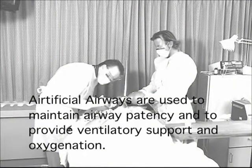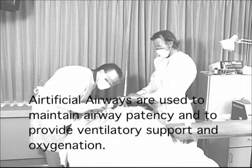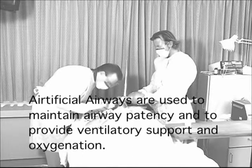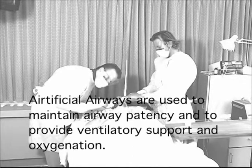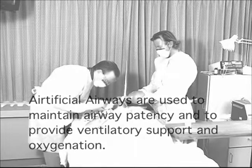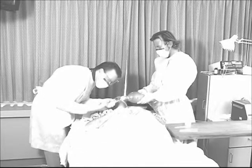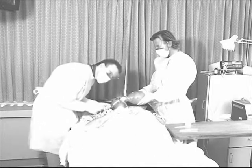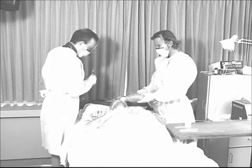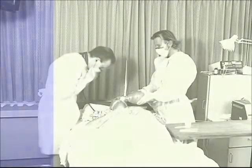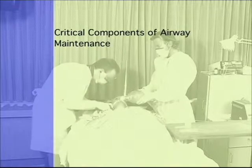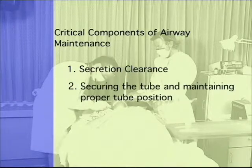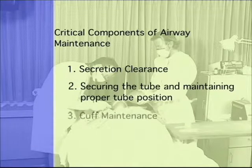Artificial airways used for prolonged periods, consisting of nasal and oral endotracheal tubes and tracheostomy tubes, are used in patients to maintain airway patency and to provide ventilatory support and oxygenation. Although the establishment of an artificial airway may be a life-saving procedure, meticulous maintenance and care are needed to prevent infection and other complications associated with intubation. Critical components of airway maintenance consist of secretion clearance, securing the tube and maintaining proper tube position, and cuff maintenance.